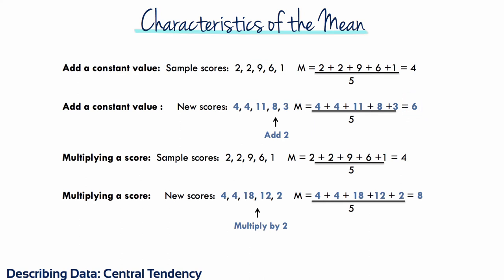Multiplying or dividing each of the scores will produce a mean that is multiplied or divided by the same factor. So multiplying each score by 2 is the same as multiplying the mean by 2.